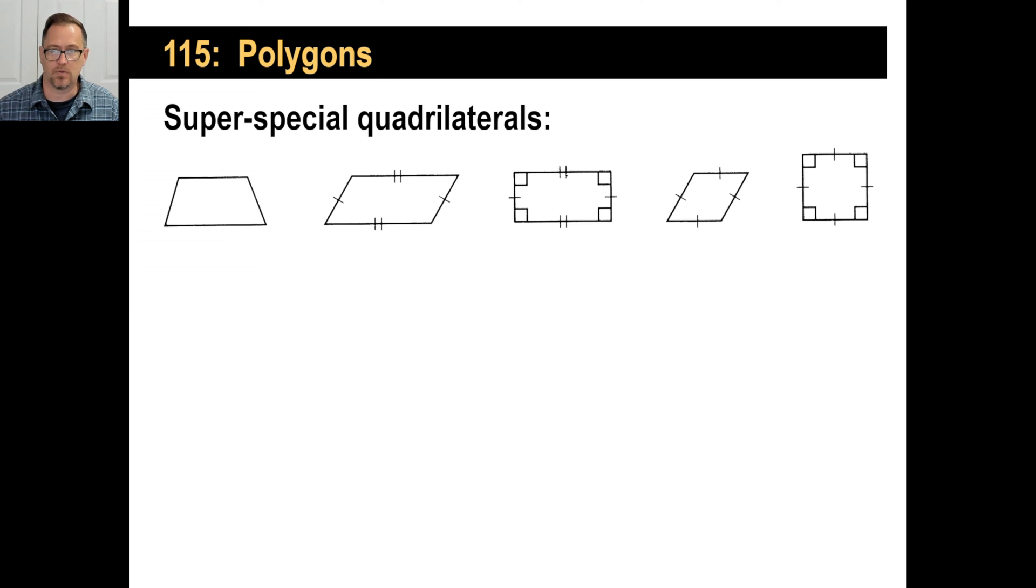This middle one is a rectangle. We all know that. Not only are the opposite sides parallel and, of course, congruent like this one. What is different about a rectangle than just a regular parallelogram? The angles, right? It has four right angles. That's the definition of a rectangle.